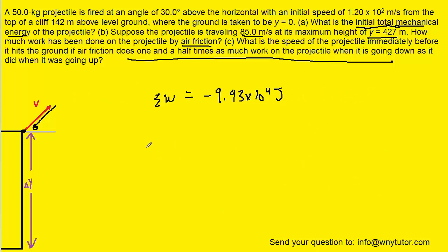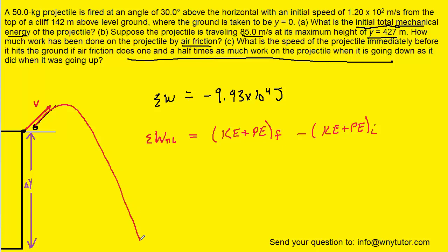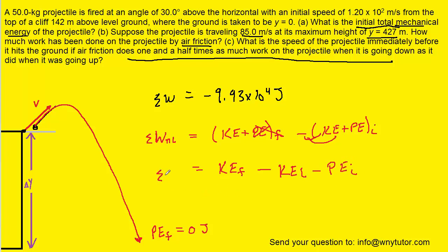Now let's apply the work-energy theorem for the total duration of the flight. The total non-conservative work equals the final kinetic and potential energies minus the initial kinetic and potential energies. As the projectile hits the ground just before impact, the gravitational potential energy is 0 joules because the object is no longer at any height above ground level. That simplifies the equation to final kinetic energy minus initial kinetic energy minus initial potential energy.